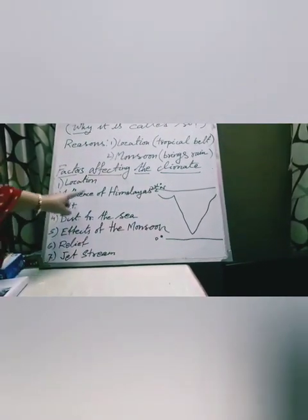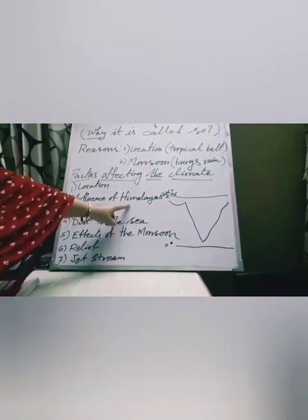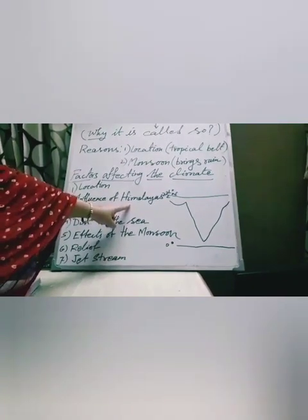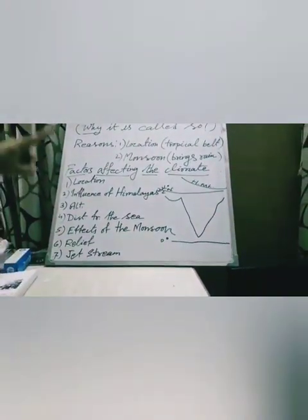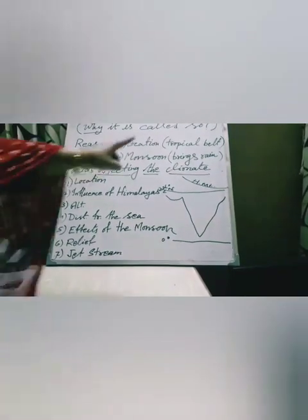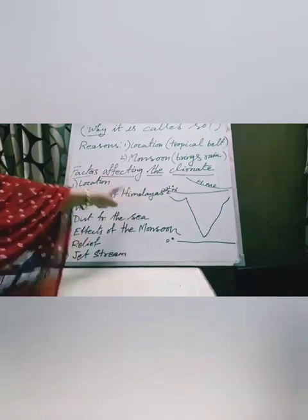The second factor is the influence of the Himalayas. The Great Himalaya, the world's highest mountain, is located in our northern part and extends up to the eastern part. This mountain protects us from the cold Siberian wind coming from Central Asia, and also forces monsoon winds to shed all their moisture within the country. That's why the Himalayas also affect our climate.